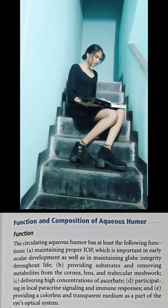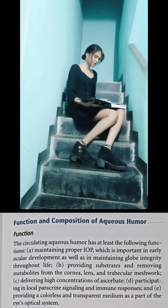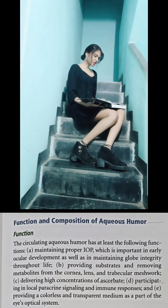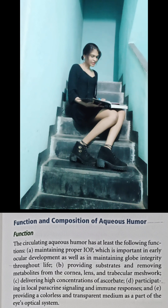The circulating aqueous humor has at least the following functions: A. Maintaining proper intraocular pressure, which is important in early ocular development as well as in maintaining globe integrity throughout life. B. Providing substrates and removing metabolites from the cornea, lens, and trabecular meshwork. C. Delivering high concentration of ascorbic acid. D. Participating in local paracrine signaling and immune responses. E. Providing a colorless and transparent medium as part of the eye's optical system.